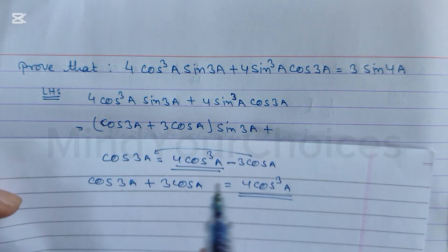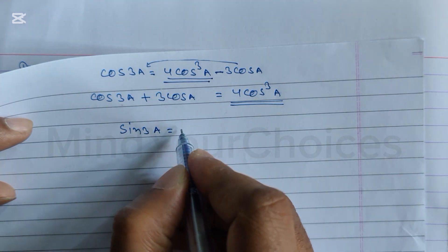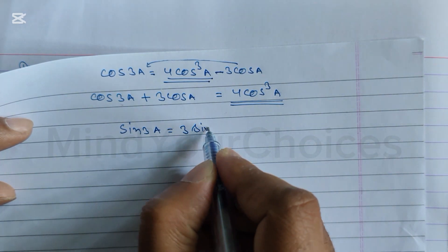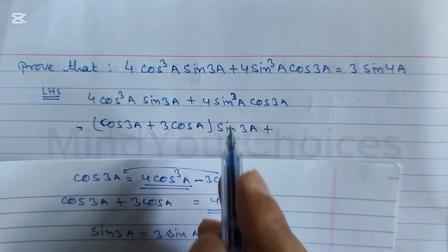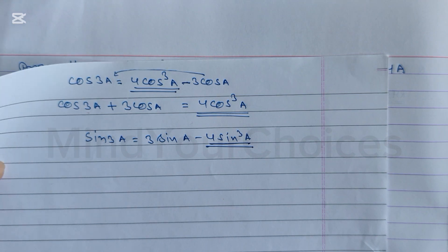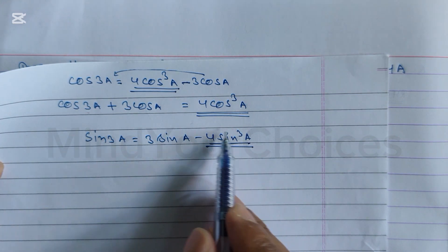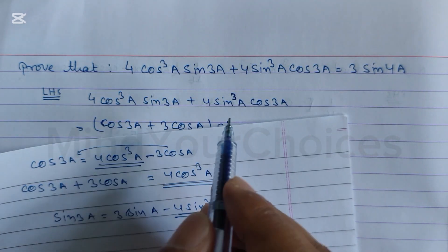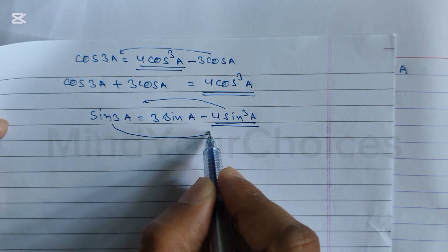Now write down: (cos3a + 3cosa)·sin3a + 4sin³a·cos3a. Now we put the formula of sin3a. What is the formula of sin3a? sin3a = 3sina minus 4sin³a. From this, we extract the value of 4sin³a.